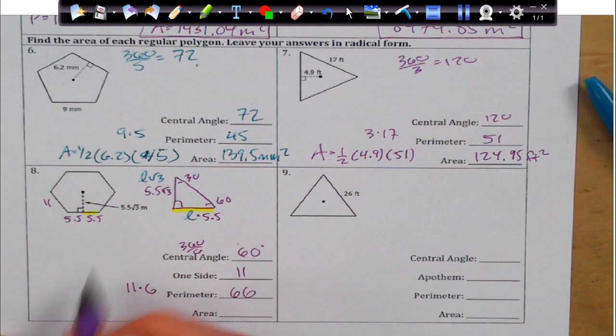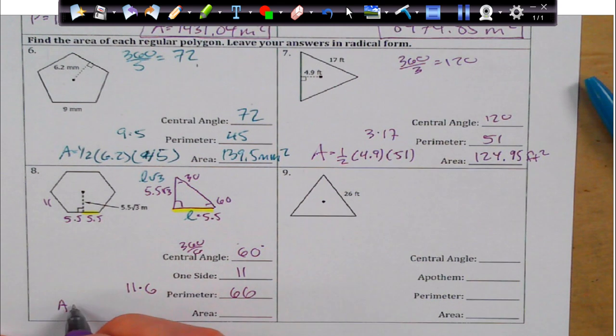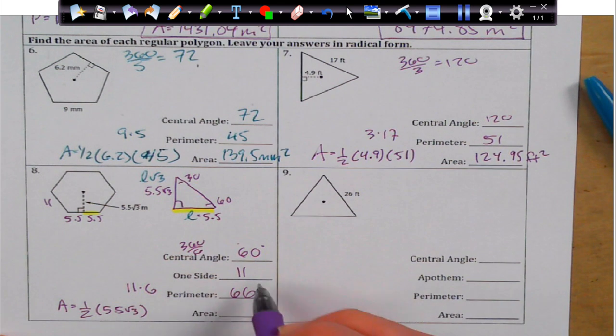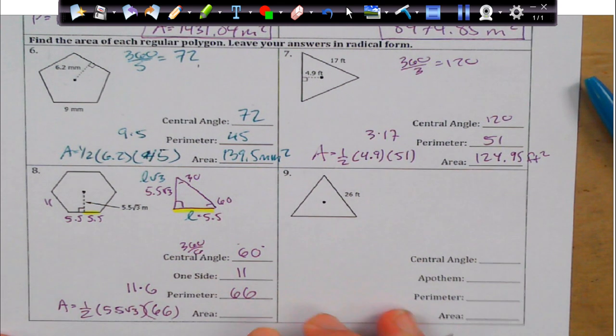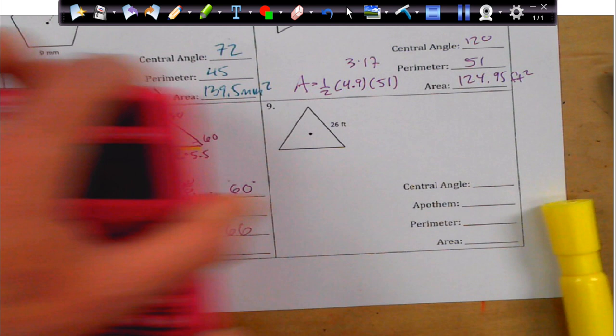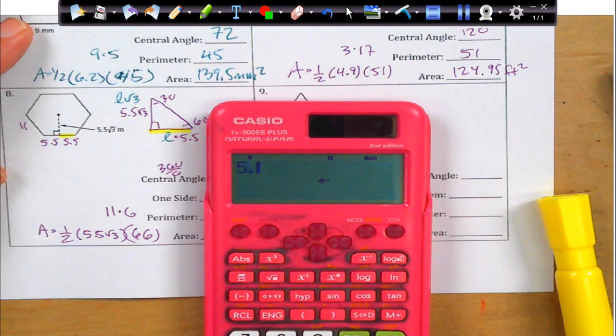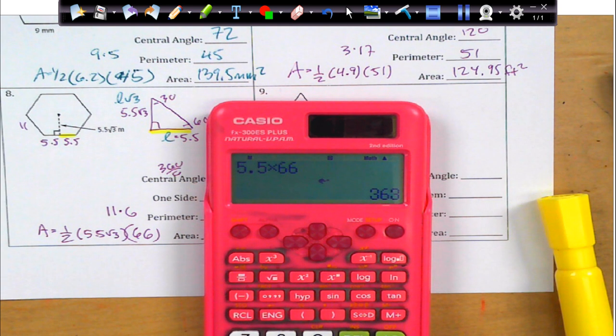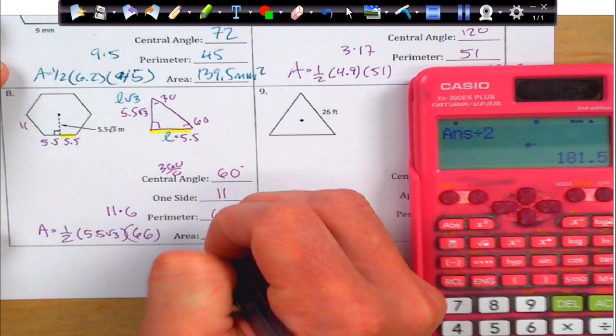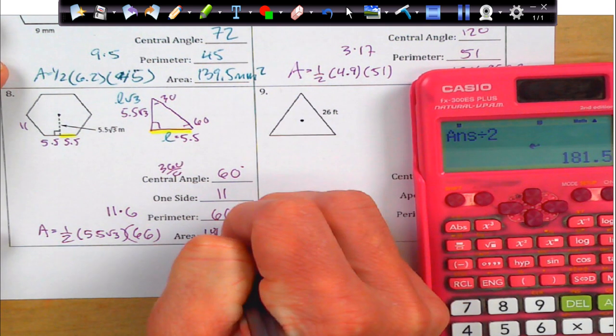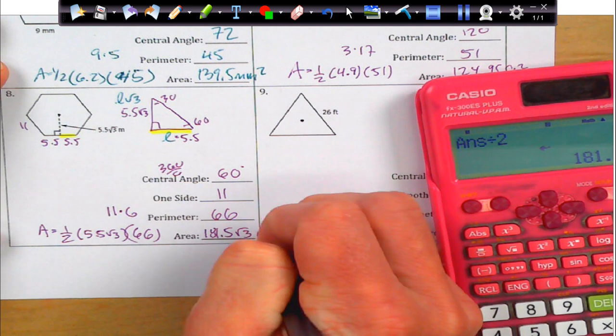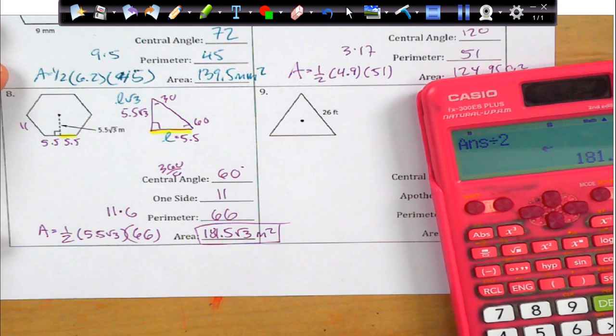And then, we can find our area by doing area equals 1 half my apothem, which is 5.5 rad 3 times 66. Now, what I actually like to do is just leave the rad 3 out of my calculation altogether. And so, I'm just going to go and do 5.5 times 66, which is going to give me 363. And then, I'm going to divide that by 2, which is going to give me 181.5. And then, I just slap on the rad 3 at the end with my units of measure, and I am done. And I found my area.